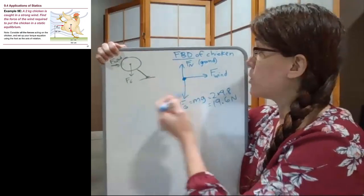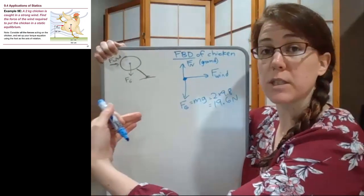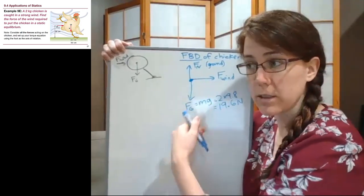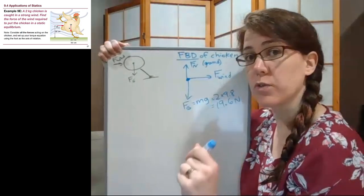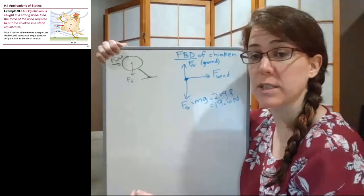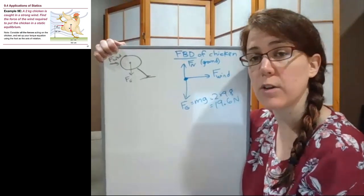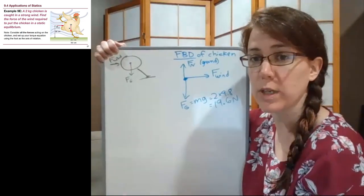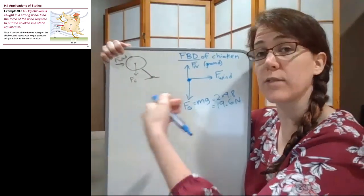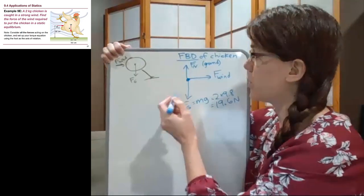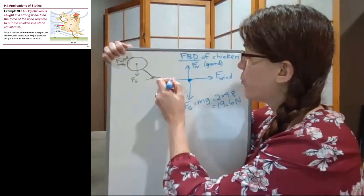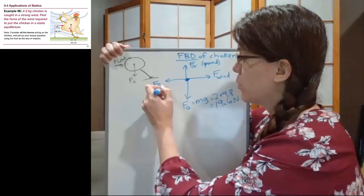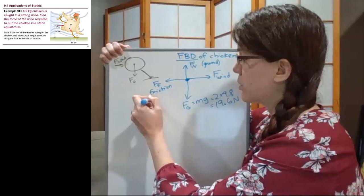And then if this was all we had, that chicken would be sliding to the right, so there is a force preventing that motion. That may start to ring bells for us that friction is preventing that chicken from sliding. If instead of a grassy meadow this chicken were on an ice rink, who knows why, but if we put them on an ice rink then that wind could actually have that chicken slide across the ground since there's no friction. Friction is able to hold it in place, so friction, which is also happening at the ground.